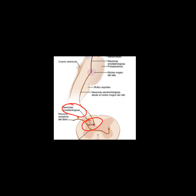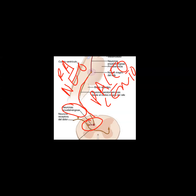Las encefalinas activan el sistema de analgesia, que a su vez produce una inactivación de las vías para el dolor. Existen dos vías: la neoespinotalámica para el dolor rápido, que utiliza glutamato, y la paleoespinotalámica para el dolor lento, que utiliza sustancia P. Cuando se produce la liberación de endorfinas y metencefalinas, no se continúa con la transmisión de la vía del dolor.